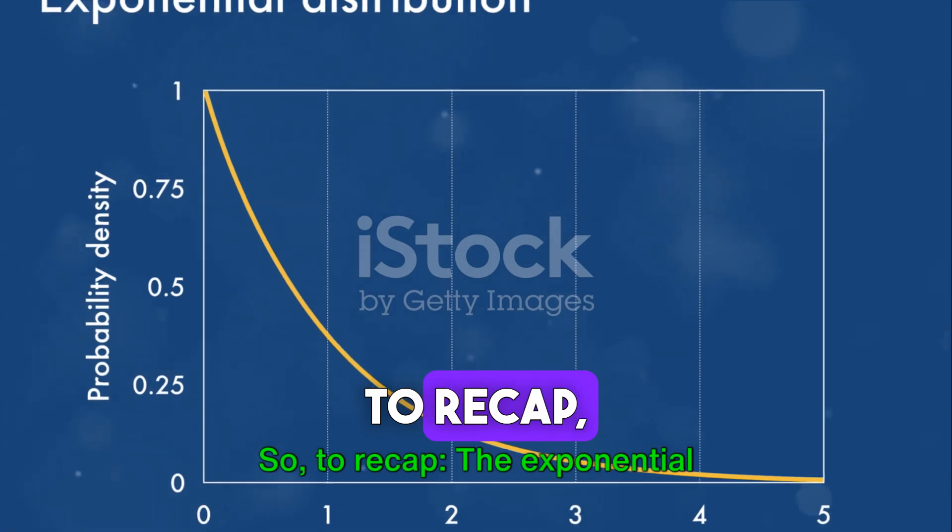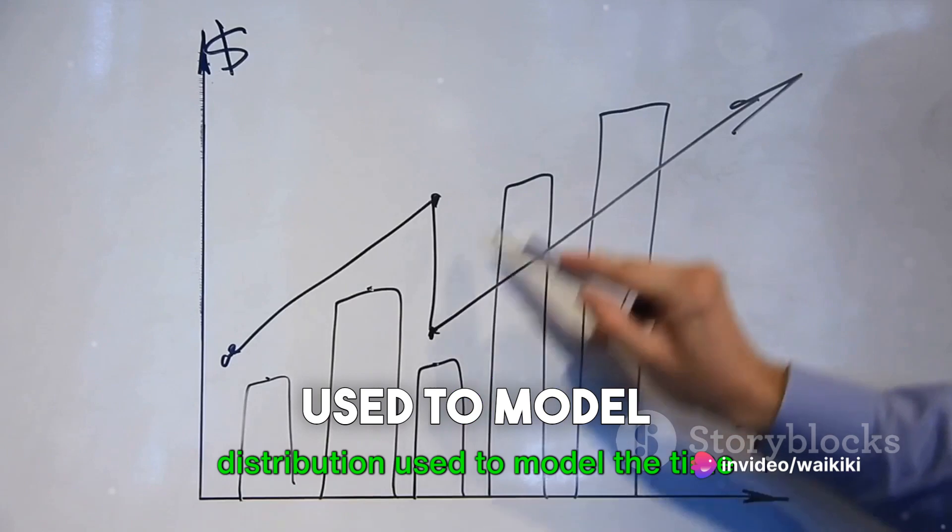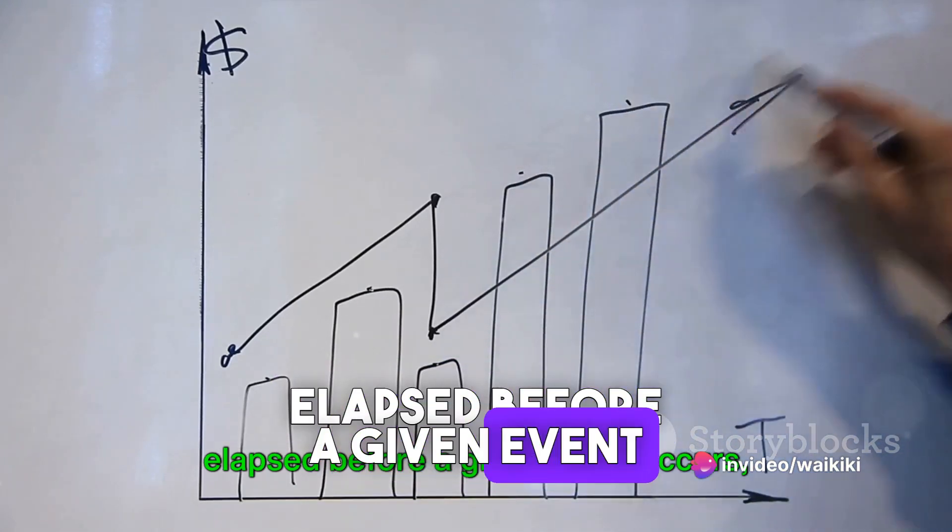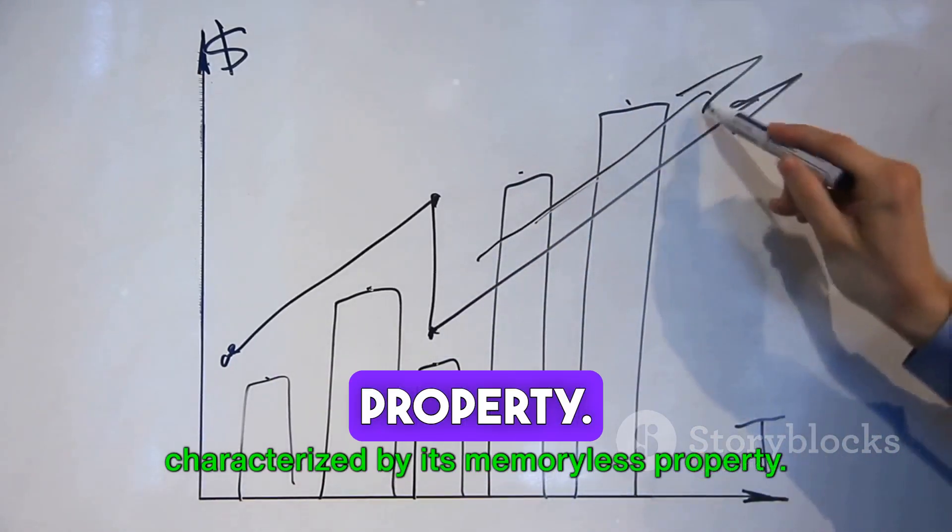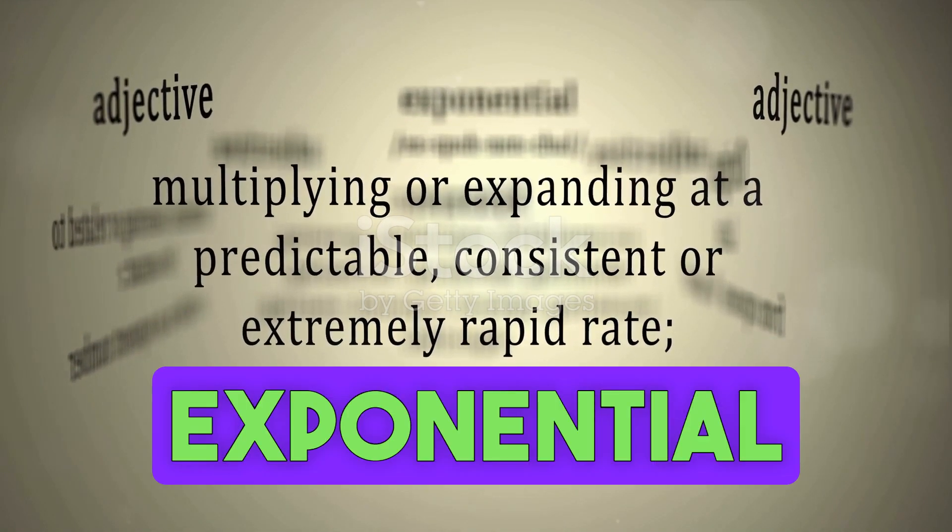So, to recap, the exponential distribution is a continuous probability distribution used to model the time elapsed before a given event occurs, characterized by its memoryless property. The PDF of the exponential distribution is an exponential function, with the rate parameter determining the rate of event occurrence.